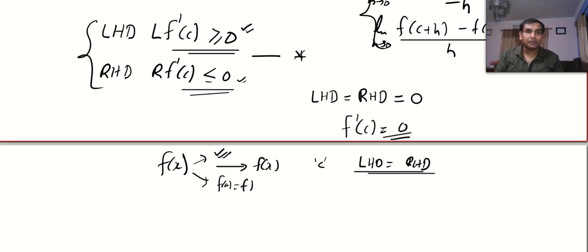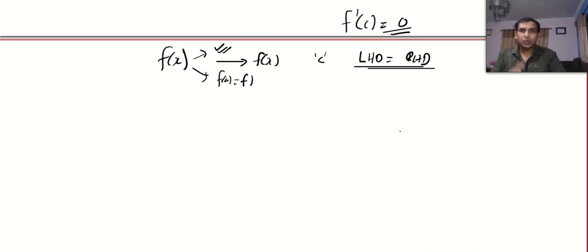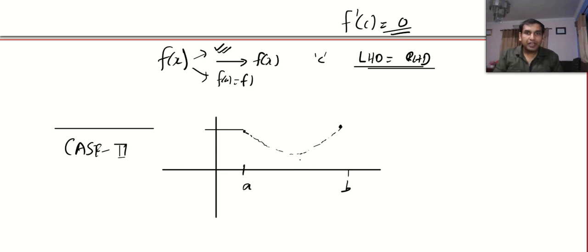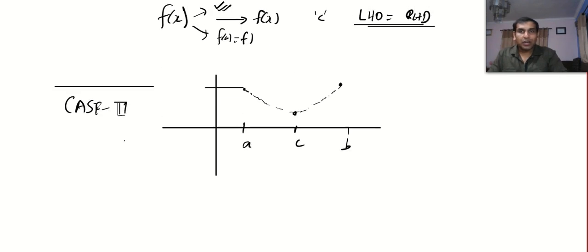Case 3: we will state but not prove. Another possibility is the function decreases first from a, then increases to reach the same height at b. Here we assume c to be the minimum point and the same proof applies similarly as in case 2.